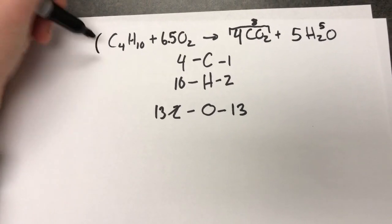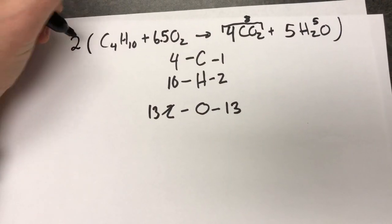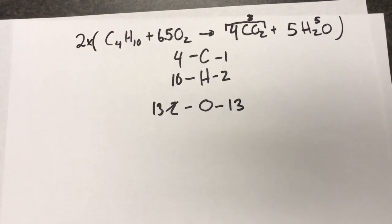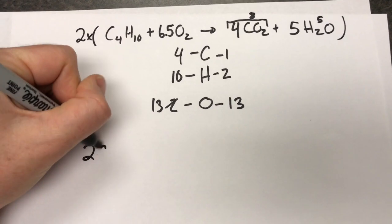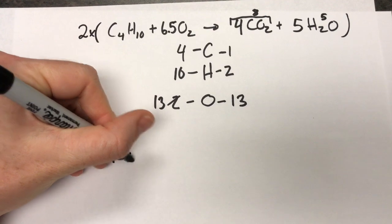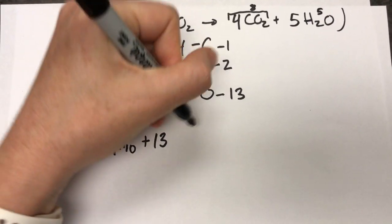So we're going to take this whole reaction and multiply it all times 2. So our final will be 2 C4H10 plus 13 O2